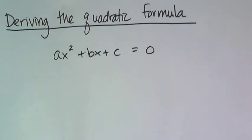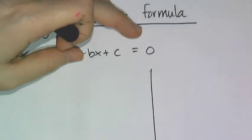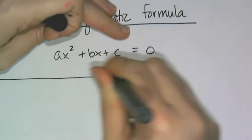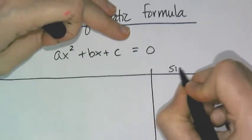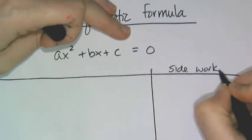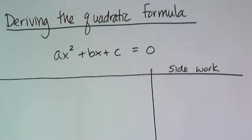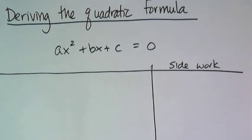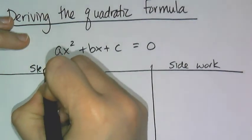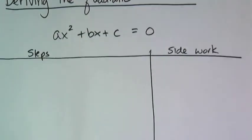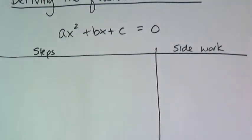So now that we know how to complete the square, I'm going to show you where the quadratic formula comes from. I'm going to make two little columns here. And I'm going to make this side here the side work because I'm going to have to do some simplifying fractions and stuff. That's not actually part of the deriving the formula. On this side are going to be the steps to derive the formula. And over here I'm going to put any side scratch work I need to do.